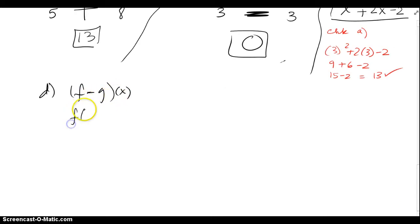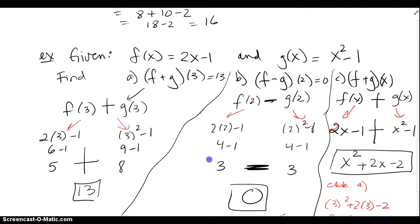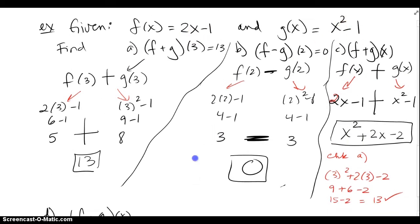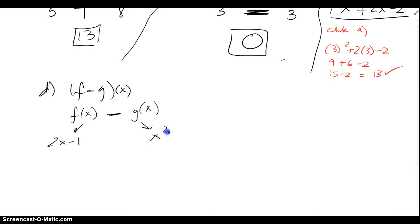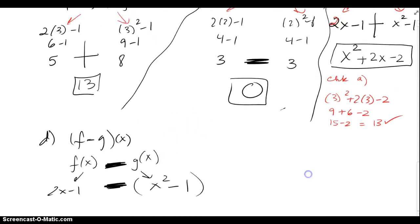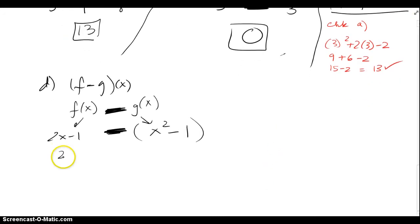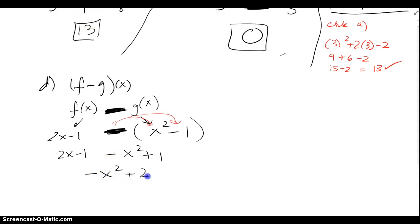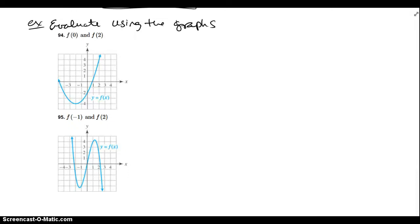Let's also find (f-g)(x). x gets pulled by both f and g, then they get subtracted. f of x is 2x minus 1 and g of x is x squared minus 1. Be careful — the minus sign affects everybody, so parentheses are necessary. Distribute the negative: 2x minus 1 minus x squared plus 1. The constants cancel, leaving negative x squared plus 2x.